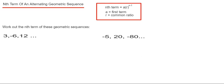Hi guys, welcome back. This is Maths 3000. I'm going to show you how to work out the nth term of an alternating geometric number sequence. To do this, we'll need to work out the first term of the sequence and the common ratio.